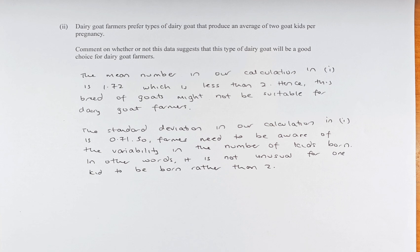Dairy goat farmers prefer the type of goats that produce an average of 2 kids per pregnancy. Comment on whether this data suggests that this type of dairy goat will be a good choice for the dairy goat farmer.